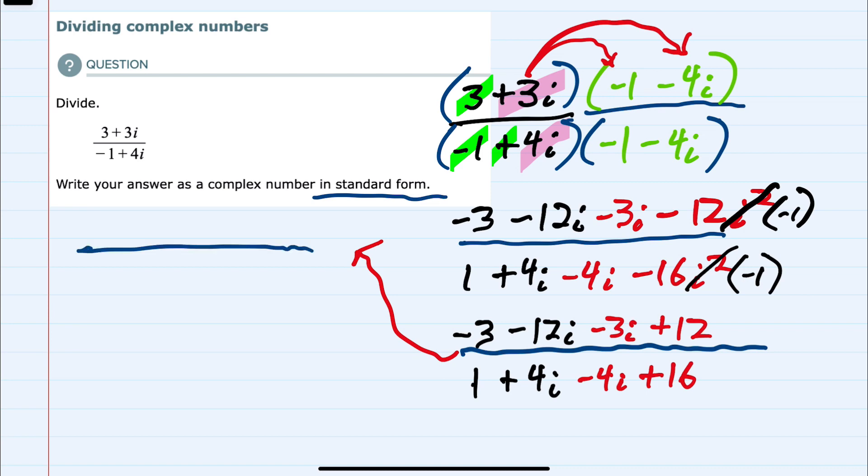And in the numerator, for rational components, we have the minus 3 and the plus 12. So those combine as 9.